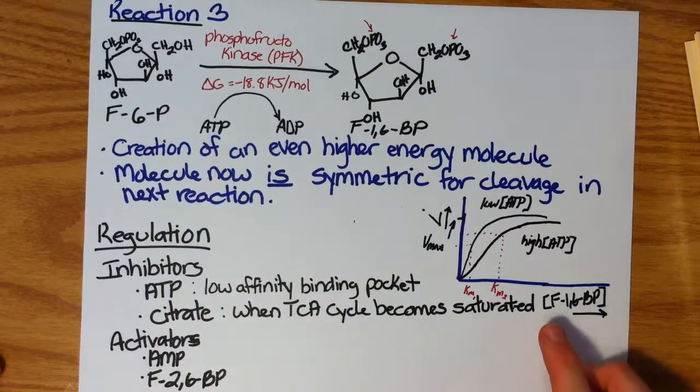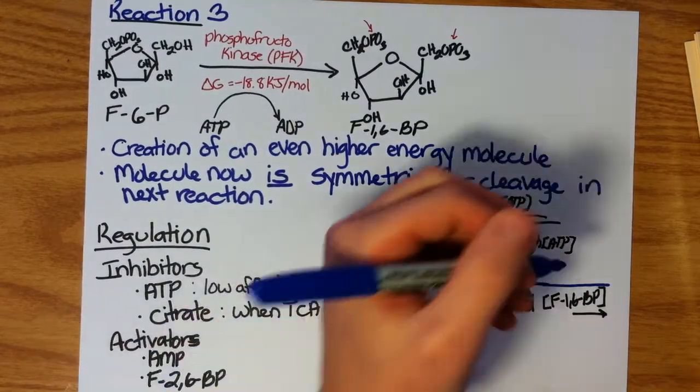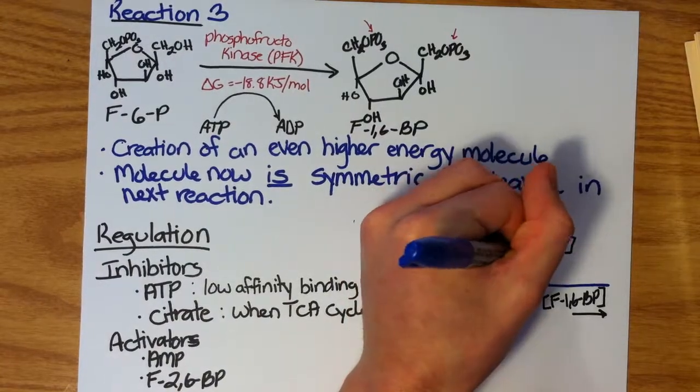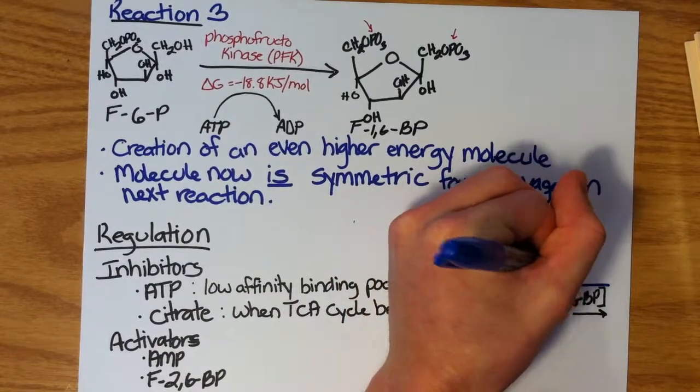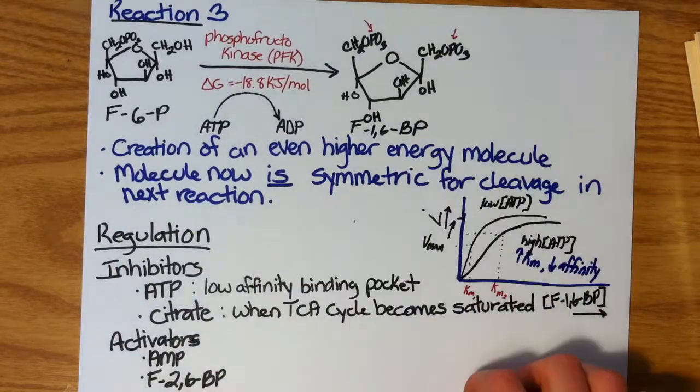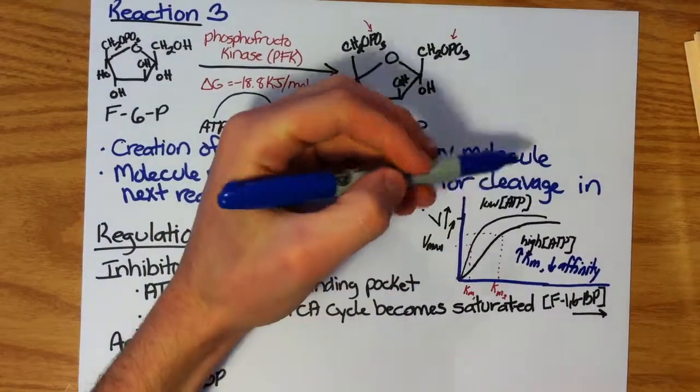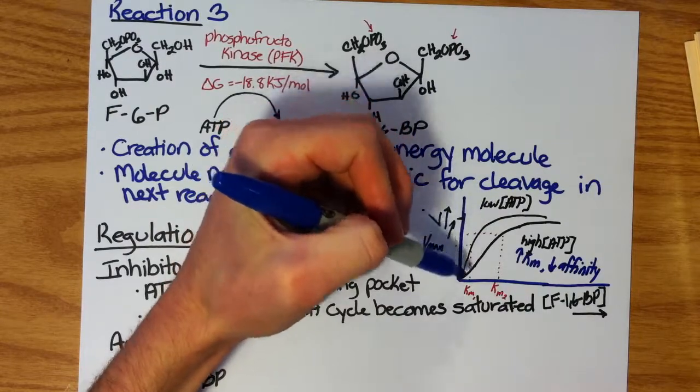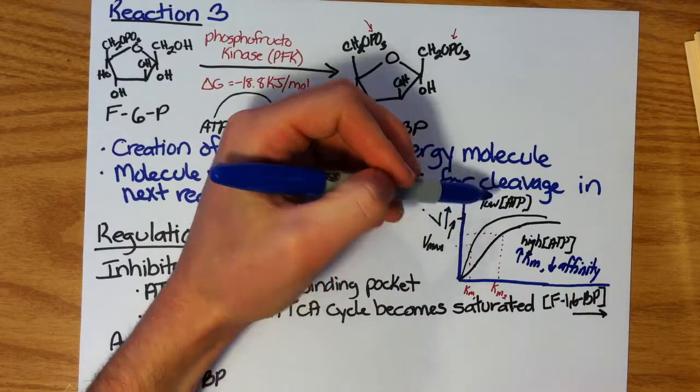Remember, this is under high concentrations of ATP. The higher the Km, the lower the binding affinity. Again, the higher the Km here, the lower the affinity, and vice versa. They have an inversely proportional relationship. The lower the Km, the higher the affinity.